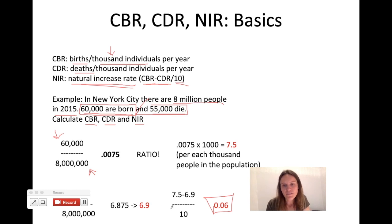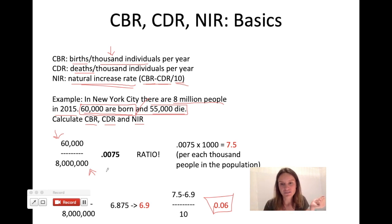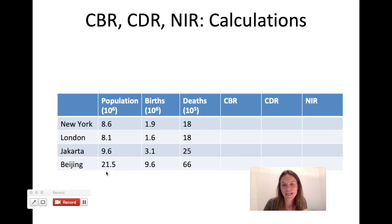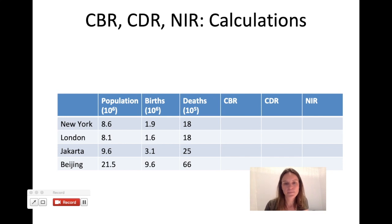You can have a natural increase rate that's negative — all that means is the population is decreasing in size. The thing you can't have, and should watch out for if given a big table of data, is a crude birth rate or crude death rate that is negative, because you can't have negative people in a population. That's a quick way to check your math. Often you're given a large table of births, deaths, and population totals and asked to make calculations.